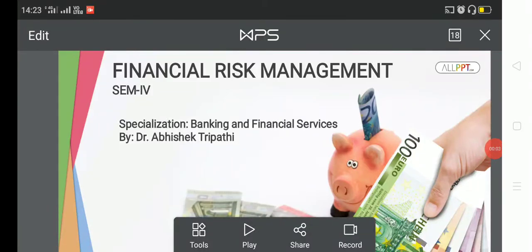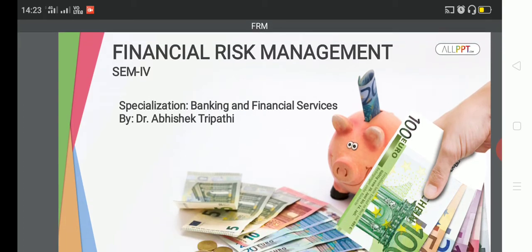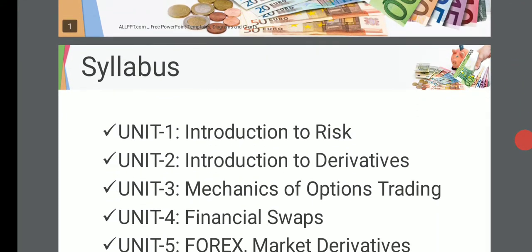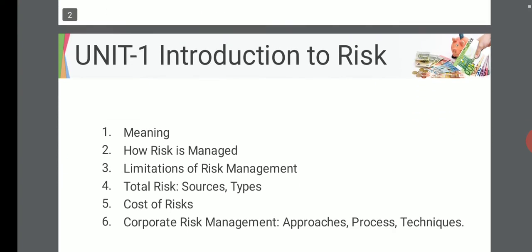Good afternoon. I've come up with a new series of online video lectures on banking specialization. MBA fourth semester has a subject known as Financial Risk Management. We'll go through the syllabus of FRM — semester four, specialization of banking and financial services. My name is Dr. Rabi Shekhar Kapi. The syllabus covers introduction to risk, introduction to derivatives, mechanics of options trading, financial swaps, and forex market derivatives.